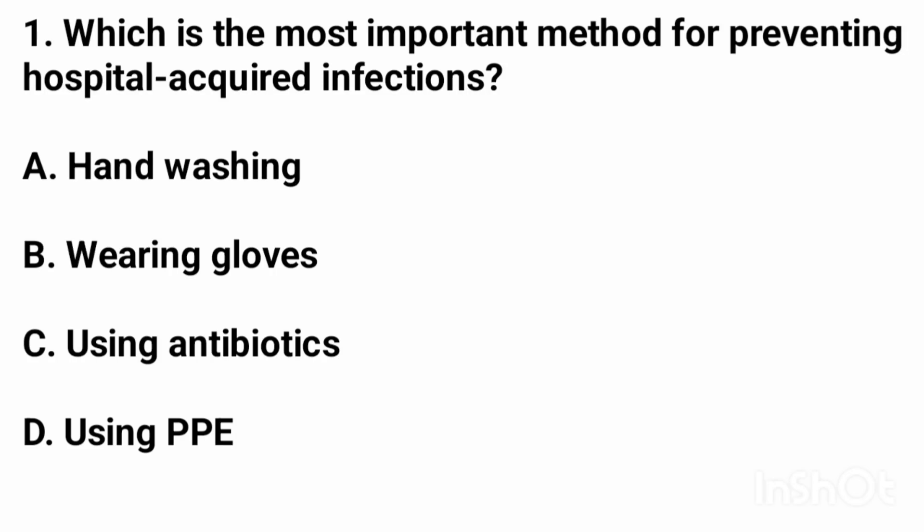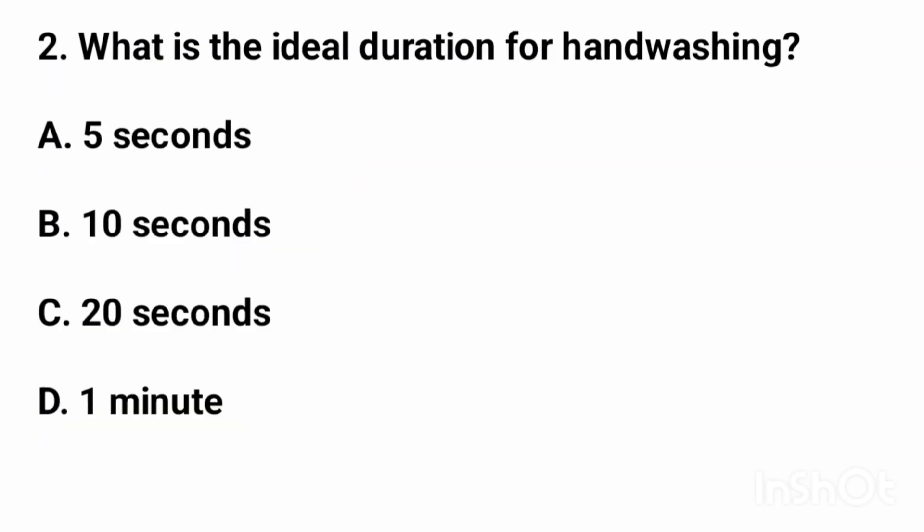Question number 1: Which is the most important method for preventing hospital-acquired infections? The right answer is option A: hand washing. Question number 2: What is the ideal duration for hand washing?